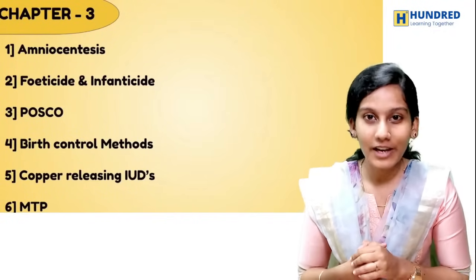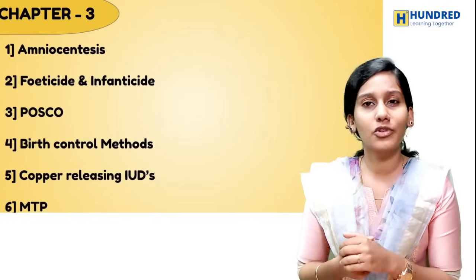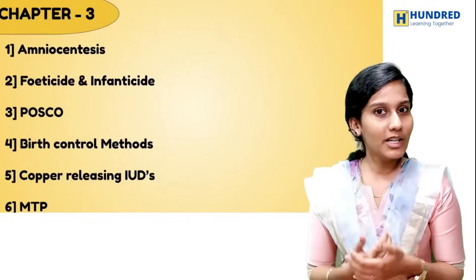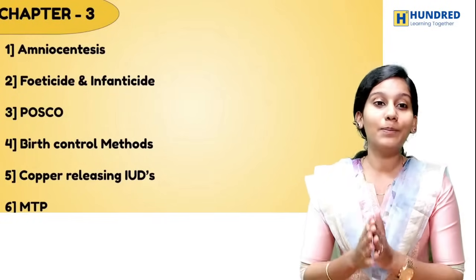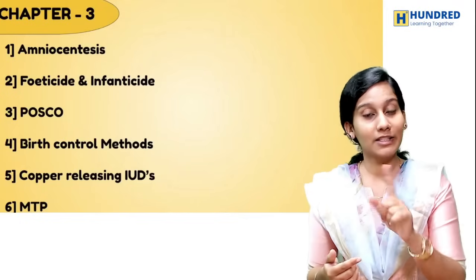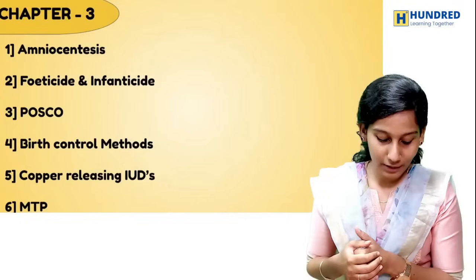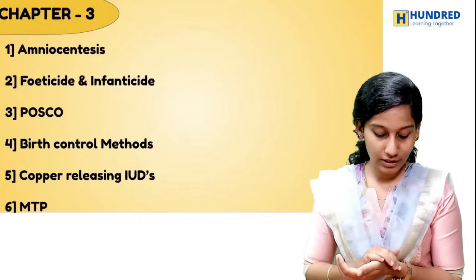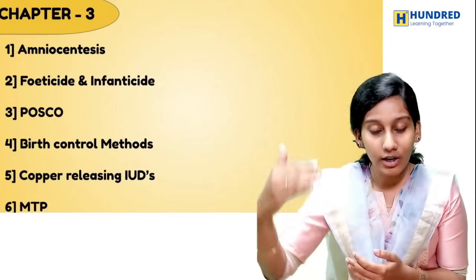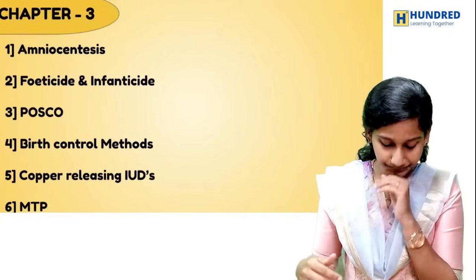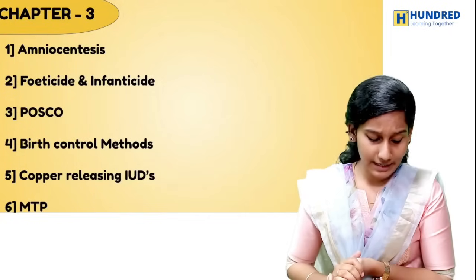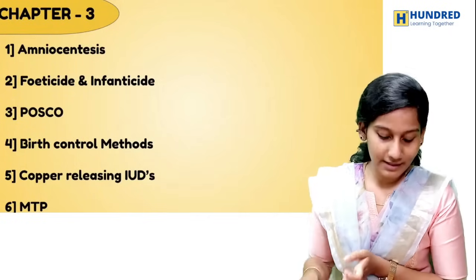Chapter 3 is Reproductive Health. You can expect a 2-mark or 3-mark question. Topics include amniocentesis, the difference between feticide and infanticide, birth control methods — all the methods — and IUDs. Also cover Medical Termination of Pregnancy (MTP).